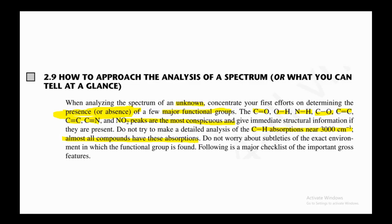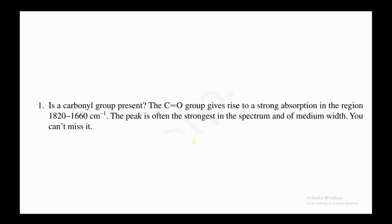The carbonyl group is a big class of functional groups which contains aldehyde, ketone, carboxylic acid, ester, amide, anhydride, and acid chloride — seven major groups fall into the category of carbonyl groups. The number one question you should ask yourself when looking at an IR spectrum is: is a carbonyl group present? When asking this, you must consider all carbonyl-containing functional groups — is there an aldehyde, ketone, ester, carboxylic acid, acid chloride, or anhydride?